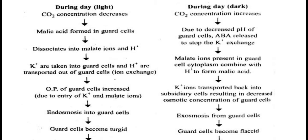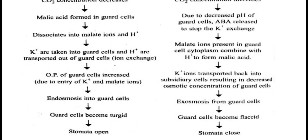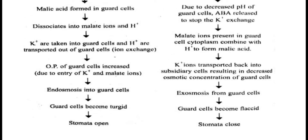During daytime, CO2 concentration decreases because it is utilized in photosynthesis. Malic acid is formed in the guard cell, which dissociates into malate ions and hydrogen ions. This is followed by ion exchange of hydrogen ions and potassium ions — hydrogen ions are transported from the guard cell to outside, and in return potassium ions enter the guard cell, facilitated by ATP consumption with the help of enzyme ATPase. As a result, osmotic potential of the guard cell increases, endosmosis occurs, the guard cell becomes turgid, and stomata open.